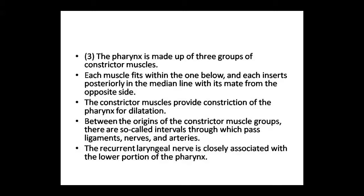The pharynx has three types of constrictor muscles. Each muscle fits within the one below it, and each inserts posteriorly in the median line joining its mate from the opposite side. The constrictor muscles provide constriction and dilatation of the pharynx. There are intervals between the muscles through which ligaments, nerves, and arteries pass, including the recurrent laryngeal nerve.